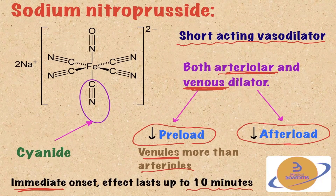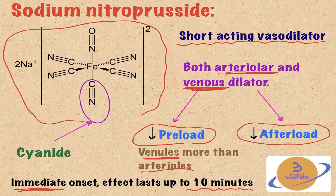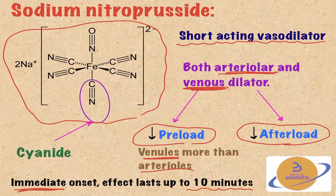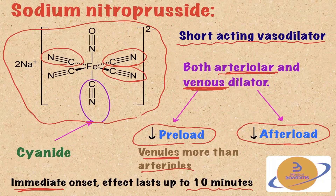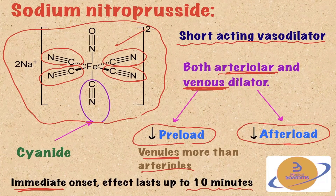This is the structure of sodium nitroprusside. The most important point we have to notice here is that sodium nitroprusside has five molecules of cyanide. Inside the body, sodium nitroprusside dissolves and releases cyanide. The cyanide can accumulate and cause cyanide poisoning with prolonged use of sodium nitroprusside.